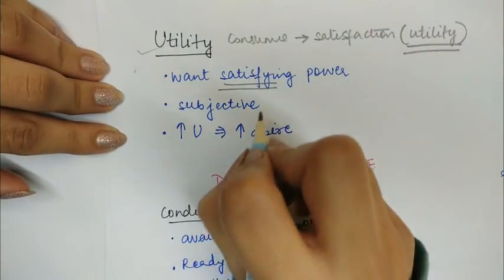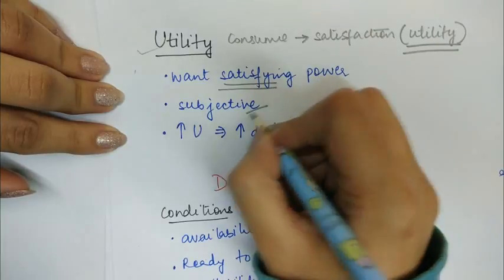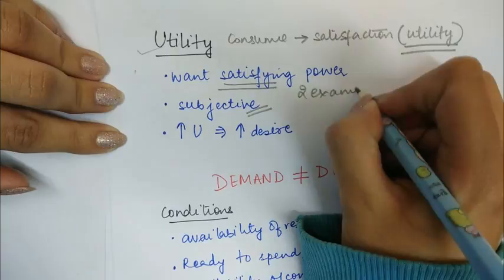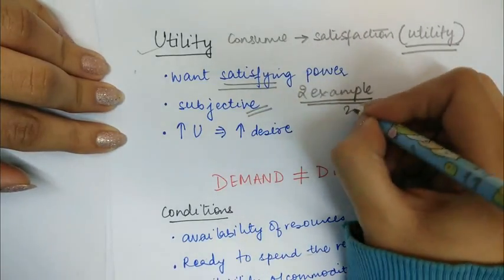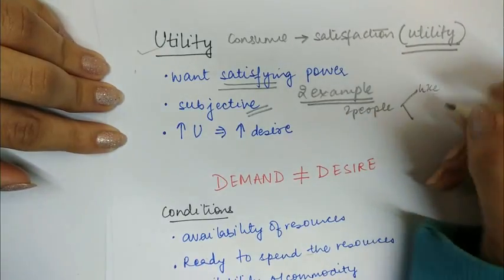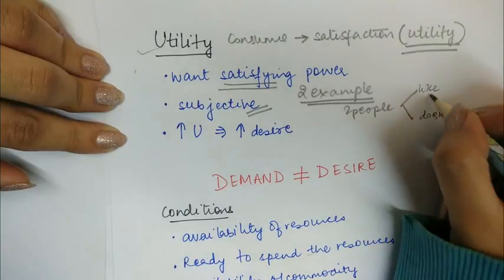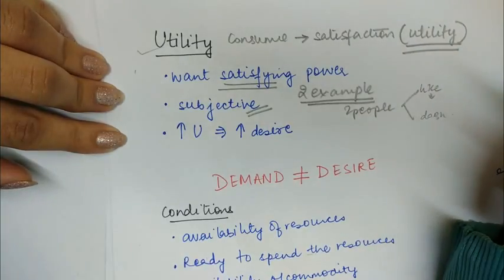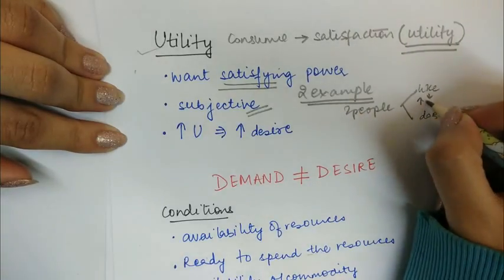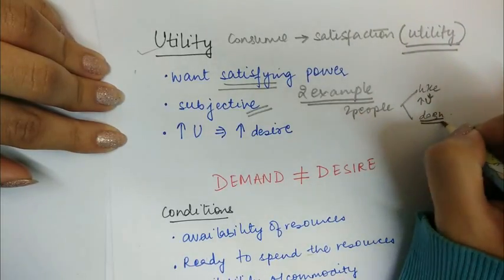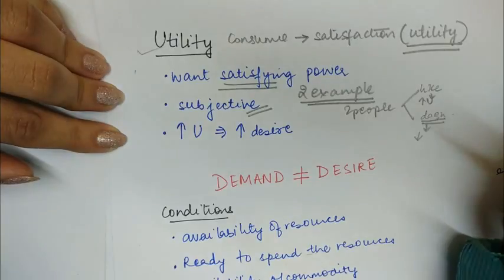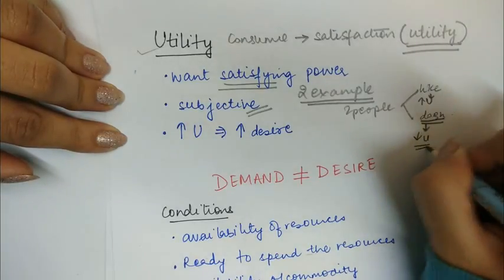Utility is subjective in nature. Take the example of two people where one person likes chocolate and the other does not. The person who likes chocolate will derive high satisfaction from consuming it, while the person who does not like chocolate will derive less utility from it.